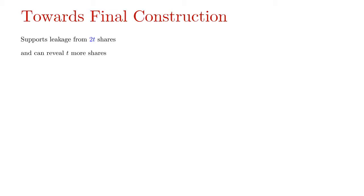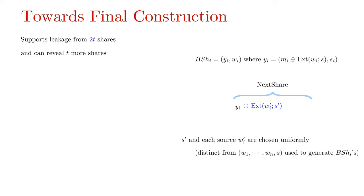Now we extend the base construction to support 2T leakage queries and T reveal queries as follows. Let's denote this sharing as next share. Note that the i-th base share can be parsed as two chunks yi and wi where wi consists of masked mi and a seed share si. In the next share procedure each yi is further masked with an extractor output on a fresh source wi' and a seed s'. Note that the sources wi' are independent of the sources and seed used in generating the base shares. The masked yi appended with a seed share si' and the source wi' used in this procedure and the source wi used at the base level forms the i-th share in the next share procedure denoted by NShi.